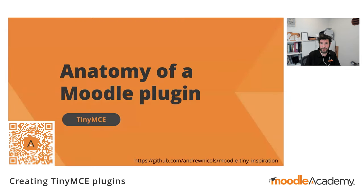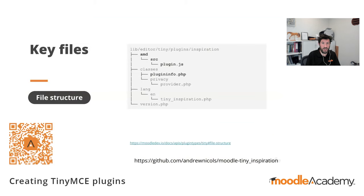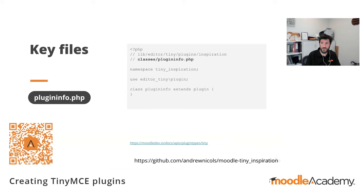For Moodle TinyMCE plugins there are two additional files you must also provide: an AMD source plugin.js file, which contains the JavaScript implementation, and a plugininfo.php file, which provides information about the plugin and allows configuration to be passed around. The plugininfo class is used as a container to describe and configure the plugin. It is in our TinyInspiration namespace with a class name of plugininfo, and it extends the editor_tiny/plugin class. Currently our plugin has no configuration and doesn't need to override any methods of the parent class, but the class is still required. We'll be adding some settings to it later.